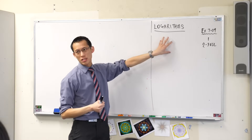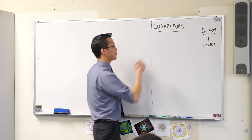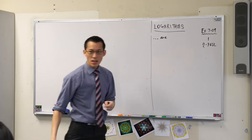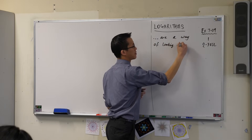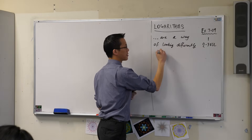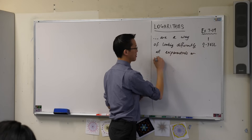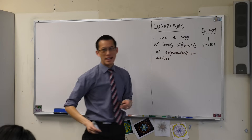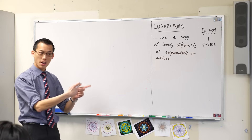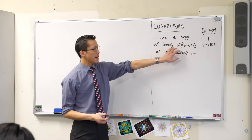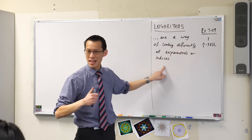This is a big new idea, so I'm going to introduce it by defining it, because you can't really work with these things unless you know what they are. Logarithms are a way of looking differently at exponentials or indices. This is a vague definition, but an example will show you exactly what I mean. It's about looking differently at something you're already familiar with — exponentials, indices, powers — things you've been dealing with since Year 7.